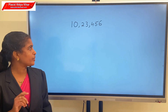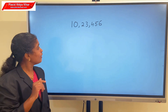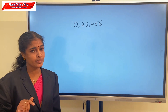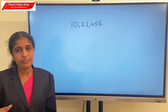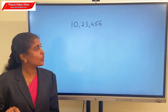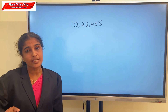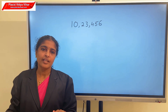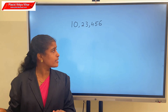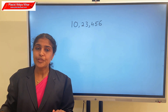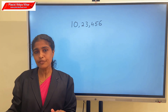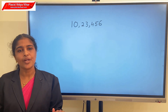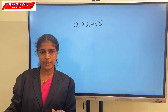Consider another 7-digit number. The digits are 1, 0, 2, 3, 4, 5, 6. Can you read this number? Yes: 10,23,456. Suppose your cousins are in the UK — they read the number in another way. They read it as 1,023,456. Both are correct. You are reading in the Indian system and your cousins are reading in the international system of numeration.